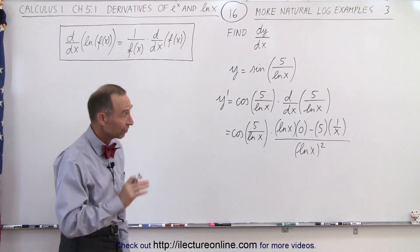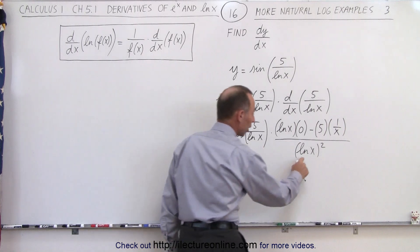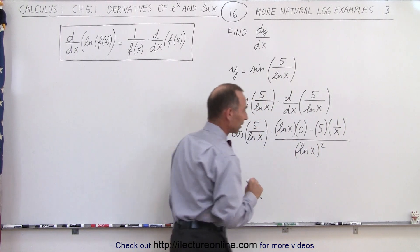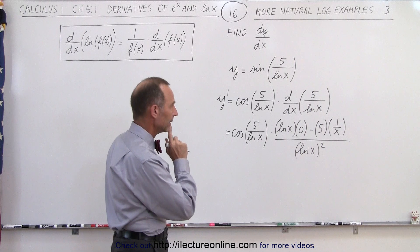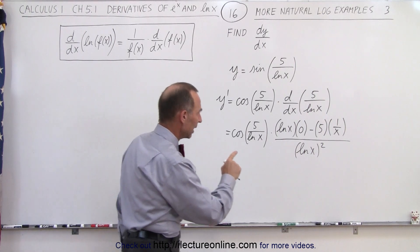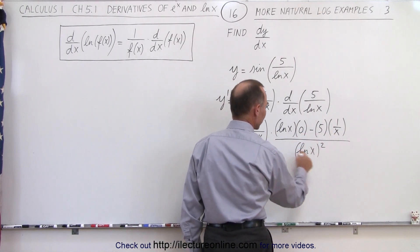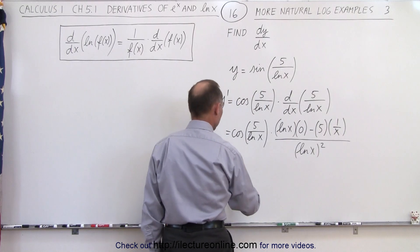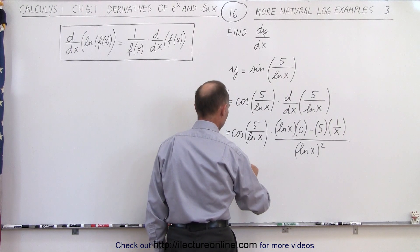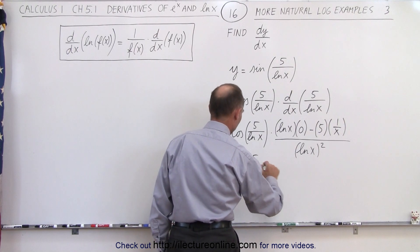Now be careful, that's not the same as the natural log of x squared. This is the quantity natural log of x squared. All right, so now we have a minus 5, we have an x in the denominator, so this can be written as the cosine of 5 divided by the natural log of x,